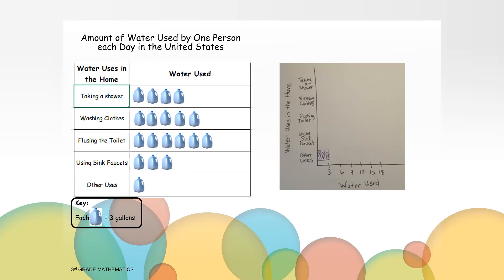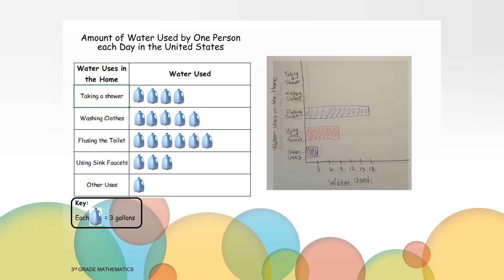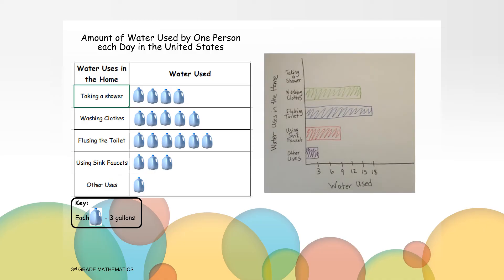Now draw the bar for using sink faucets. Now draw your bar for flushing the toilet. Now draw your bar for washing clothes. How does your bar graph look? Remember, you don't need to make your bars different colors. That's your choice as the creator. Now let's draw the last bar for taking a shower.